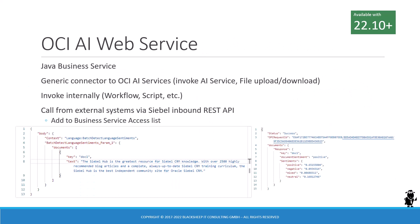The major building block of the OCI AI integration is the OCI AI web service. It's a Java business service acting as the generic connector to OCI AI services, invoking the API and also allowing file upload and download. You can invoke it internally or call it through the Siebel inbound REST API. Before you do that, you have to add it to the business service access list as usual. Below on the screenshot, you can see an example body with input arguments for the business service calling the language sentiment API — that is not an out-of-the-box use case, but as we have seen, it is supported as well.